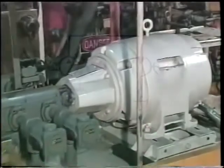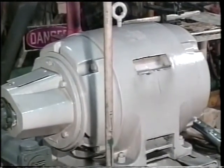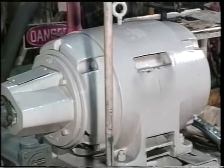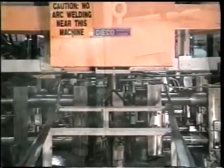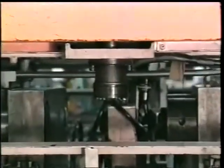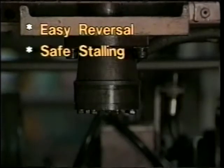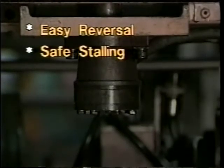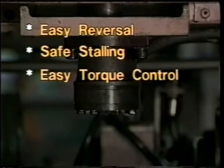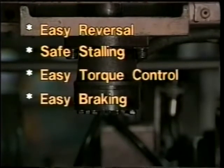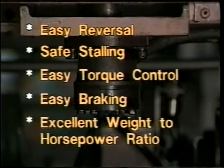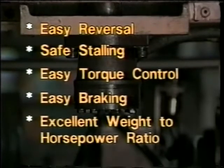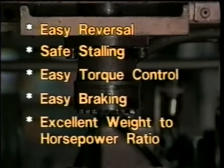In most industrial systems, the prime mover of hydraulic motors is usually an electric motor. In many applications, an electric motor could perform the same function, yet hydraulic motors continue to be widely used because of certain advantages. These include easy reversal of rotation direction, an ability to stall without damage for extended periods, easy torque control throughout the range of operating speed, easy dynamic braking, and a weight-to-horsepower ratio that greatly favors hydraulics. Typically, a 100 horsepower hydraulic motor will weigh about 50 pounds, while a 100 horsepower electric motor can weigh half a ton.